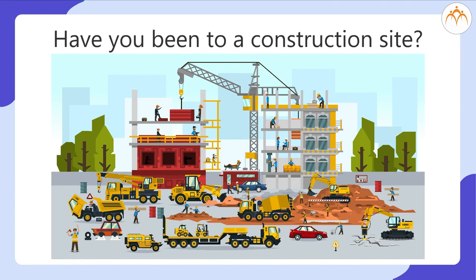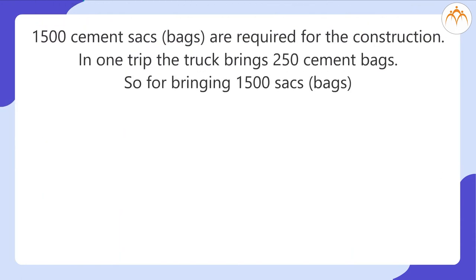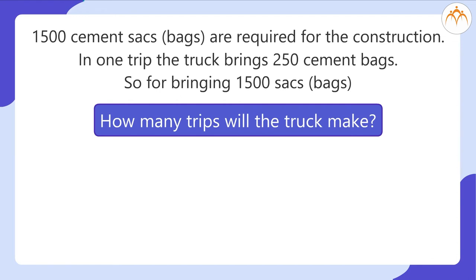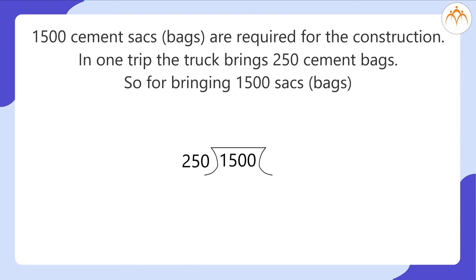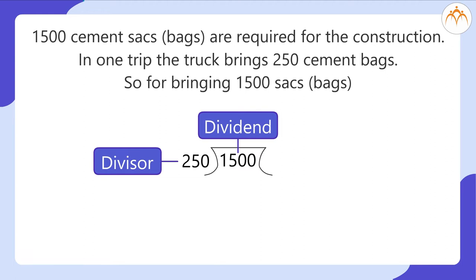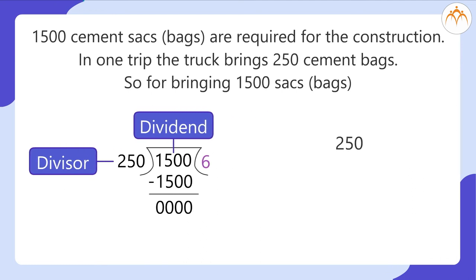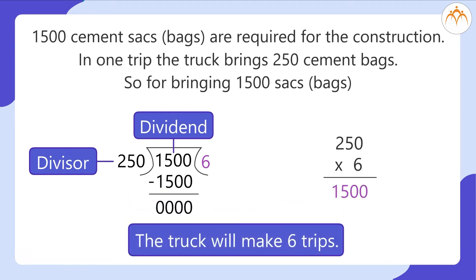Have you been to a construction site? We see many bags of cement and trucks at the site, and labors removing cement bags from the truck. Here's an example: 1500 cement sacks are required for construction. In one trip the truck brings 250 cement bags. For bringing 1500 sacks, how many trips will the truck make? Six trips. Here 1500 is the dividend and 250 is the divisor, so 1500 divided by 250 is equal to 6. In other words, 250 multiplied by 6 is equal to 1500. The truck will make 6 trips.